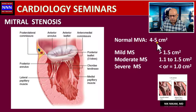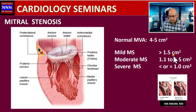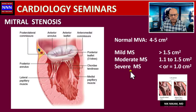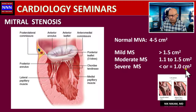The normal mitral valve area is approximately 4.5 cm². Mild stenosis is considered if the area is greater than 1.5 cm². Moderate mitral stenosis is defined as a mitral valve area of 1.1 to 1.5 cm². Severe mitral stenosis is denoted by a mitral valve area of less than or equal to 1 cm².